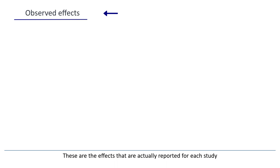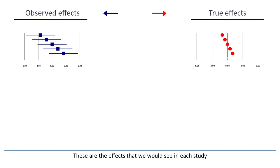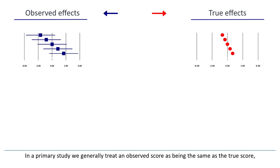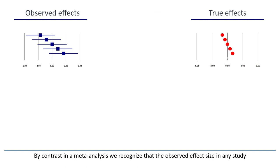I'll use this column to represent the observed effects — these are the effects that are actually reported for each study. And I'll use this column to represent the true effects — these are the effects that we would see in each study if we somehow included the entire population, so we knew the effect size with no sampling error. In a primary study, we generally treat an observed score as being the same as the true score, so we're dealing with only one set of numbers. By contrast, in a meta-analysis, we recognize that the observed effect size in any study will differ from the true effect size because of sampling error, and therefore we're working with two sets of numbers.